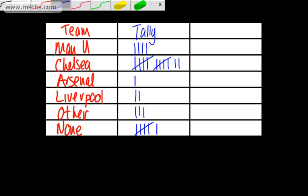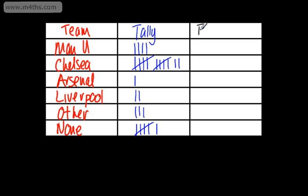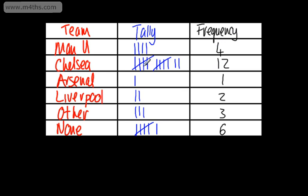The final column that we fill out is the frequency, and we do this at the end. The frequency is simply a count of the values in the tally column. So we can see that we've got four, we can see twelve, then one, two, three, and finally six. This allows us to see the numerical value once we've used the five-bar gates or the tallies.